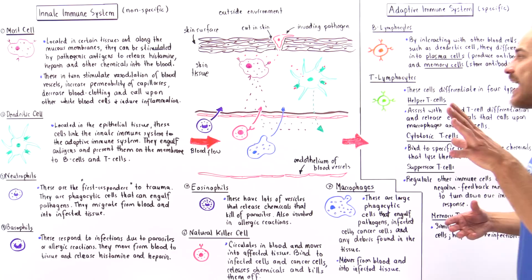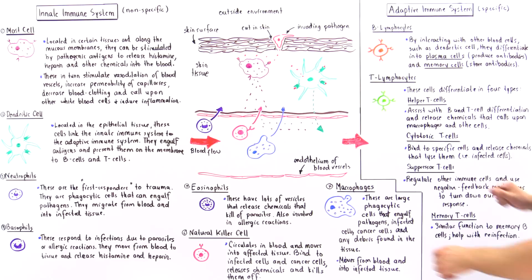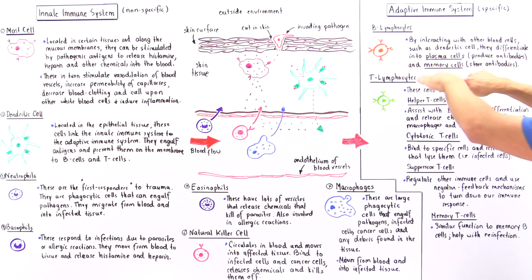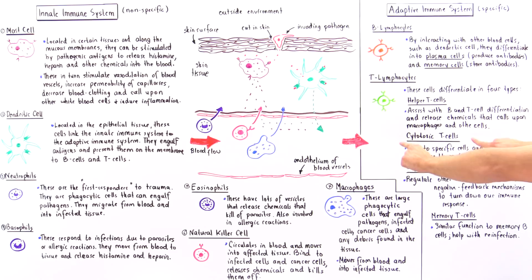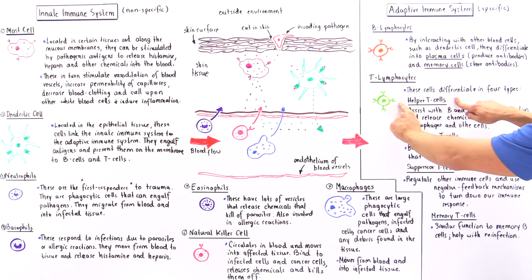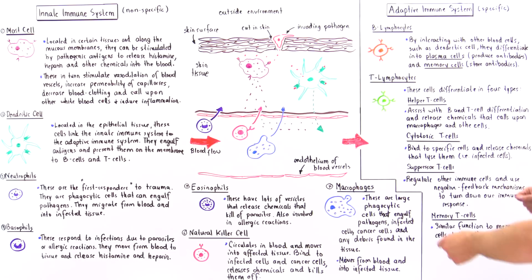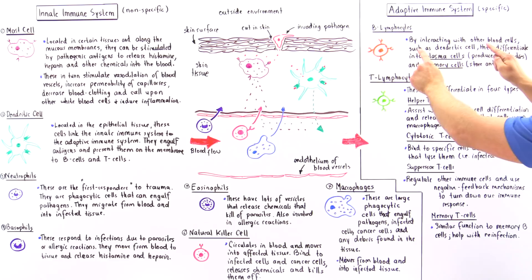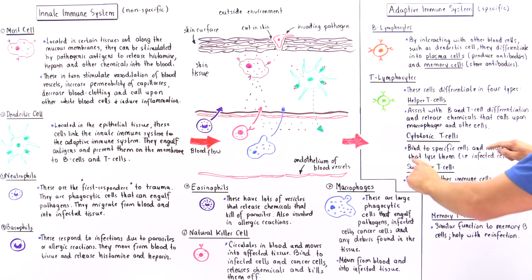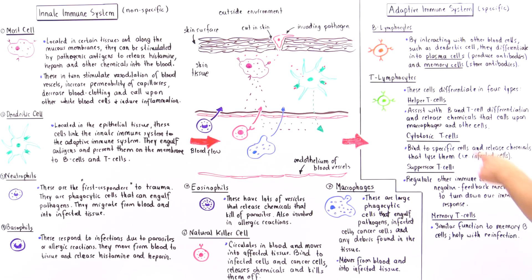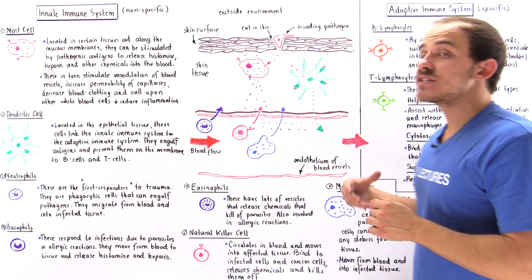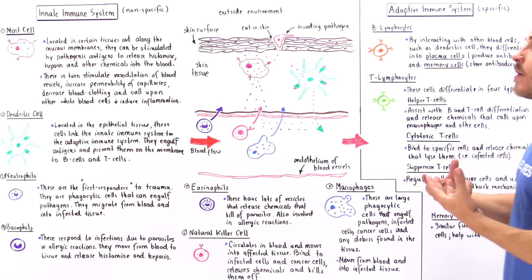Now, what about T lymphocytes? The dendritic cell can also interact with T lymphocytes. There are four different types: helper T cells, cytotoxic T cells, suppressor T cells, and memory T cells. Helper T cells are a very important type of lymphocyte because they assist many other cells with the differentiation process. Helper T cells help B lymphocytes differentiate into plasma cells and memory B cells, and also help T lymphocytes differentiate into cytotoxic T cells. They also release their own cytokines and interleukins that call upon cells like macrophages to the specific area.